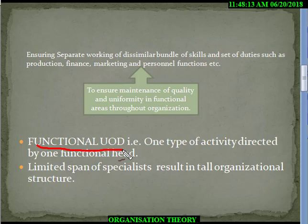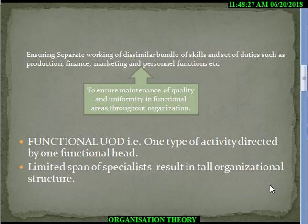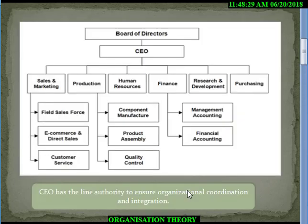In this case, functional unity of direction means that under one particular function — for example, sales and marketing — everyone's aim will be the same: to increase sales. For production, the aim may be to complete production on time or achieve low-cost production.